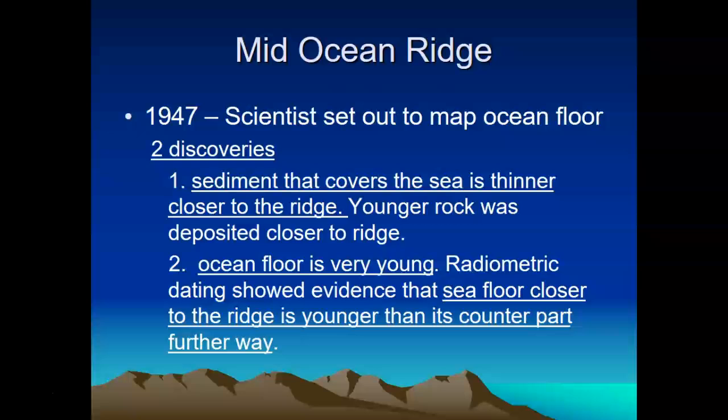In 1947, scientists set out to map the ocean floor. Technology was not where it is today, so how they did this was to get in a boat and drop a very long rope down until it hit the bottom of the ocean floor, measure that, drive a little bit further, and drop the rope again. They kept getting different depths, which was helping them figure out a couple of different things.